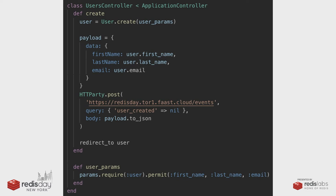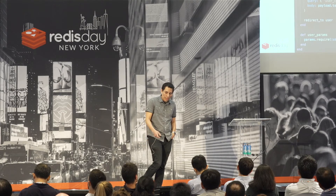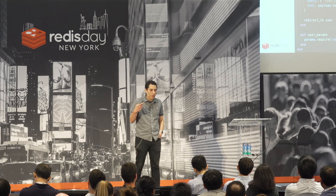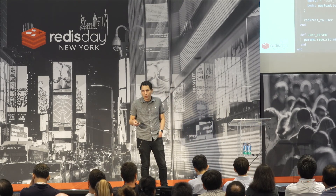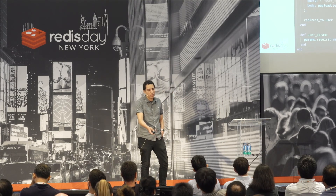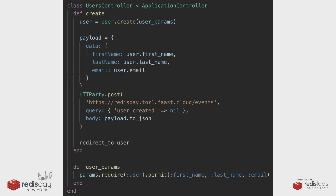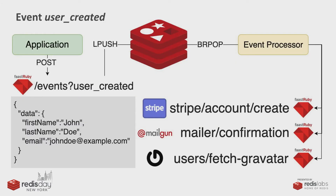This is how you would do it event-driven with FastRuby. In your Rails app, you just create a payload and then do an HTTParty POST to an endpoint you created. You could use your own custom URL there. Basically, you create the user and send a request to this API you created on FastRuby to trigger an event — triggering the event as a query param, 'user created.' When the event gets there, it gets the payload and does an LPUSH into a list on Redis.